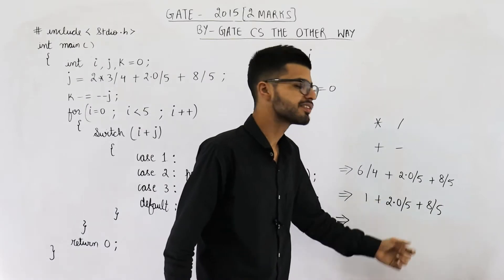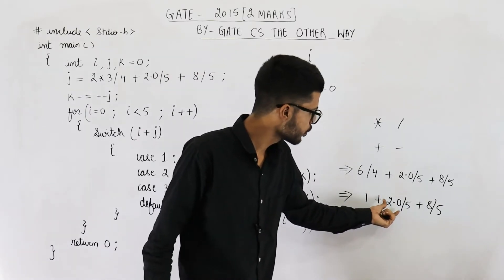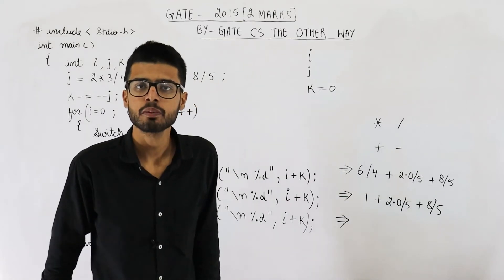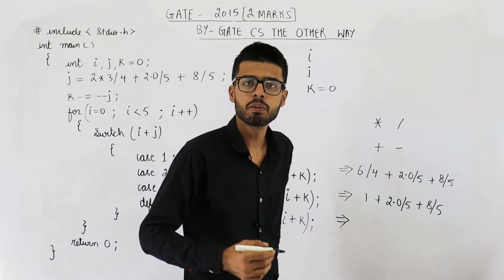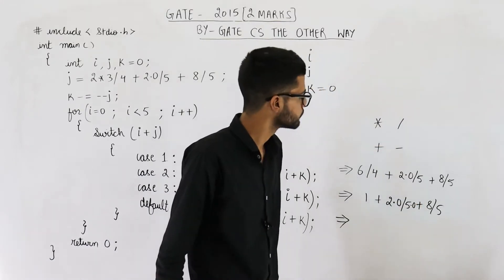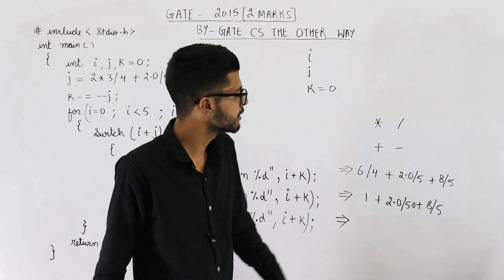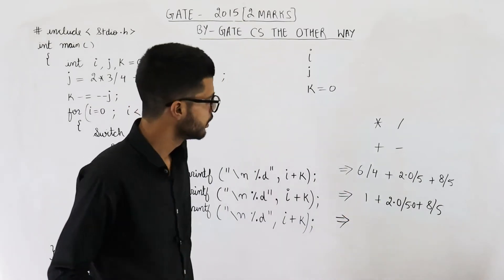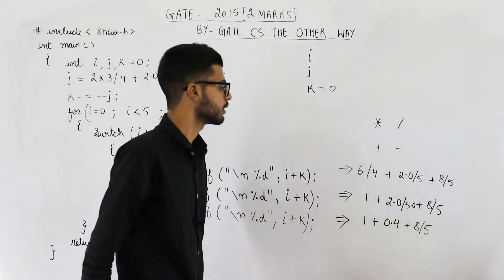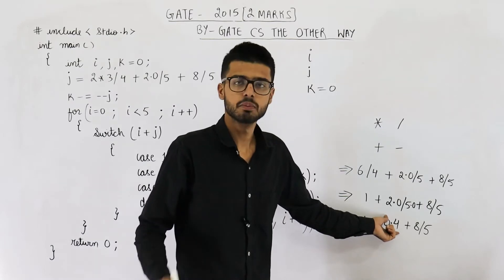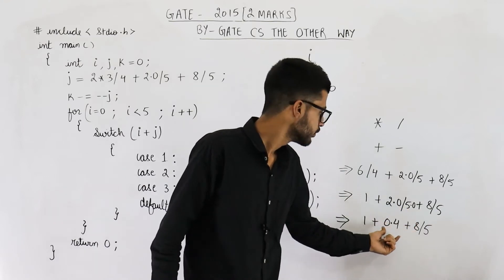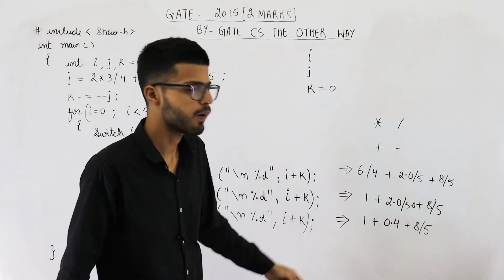Now we need to solve the next divide. 2.0 divided by 5 means a float is being divided by an integer, so we need to upgrade that integer — 5 becomes 5.0. So 2.0 divided by 5.0 is 0.4. We cannot neglect the decimal part here because both operands are float, so the answer is also float.